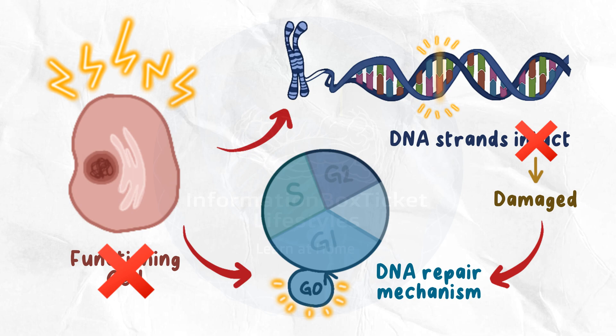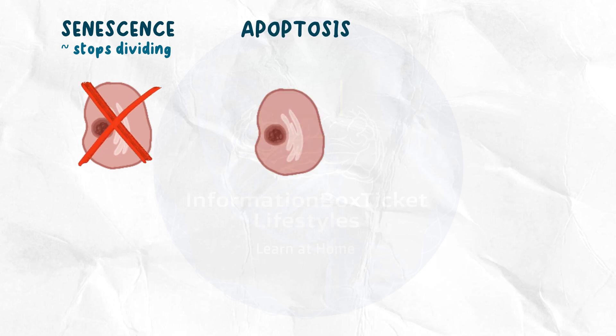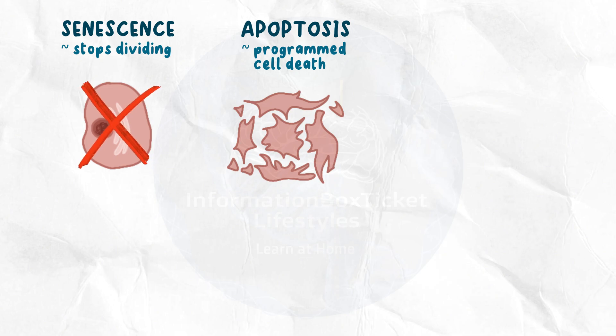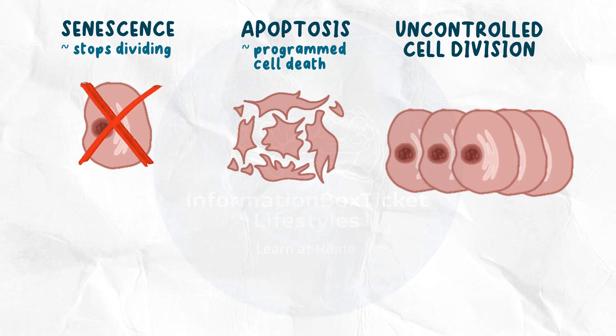If the DNA damage starts to pile up, a cell will typically go down one of three paths. First, the cell may enter senescence, which is when it stops dividing. Second, the cell may undergo apoptosis, or programmed cell death. Third, the cell may continue to divide uncontrollably, eventually becoming a tumor.